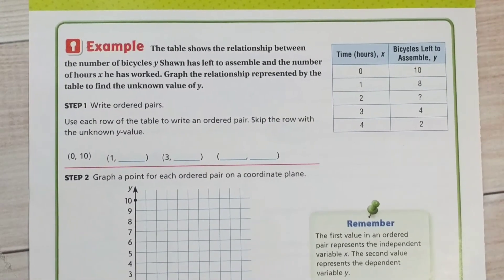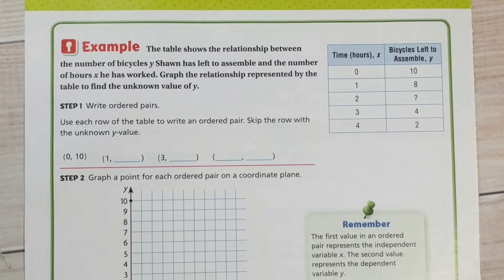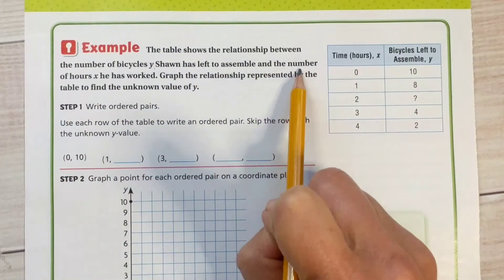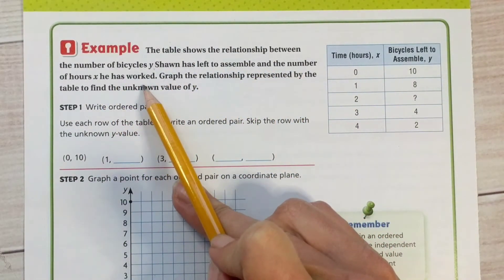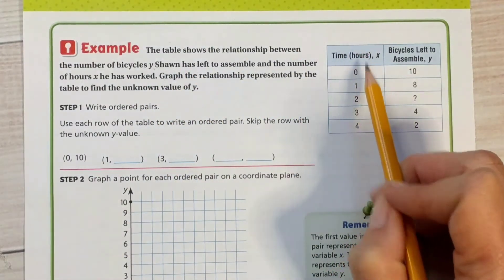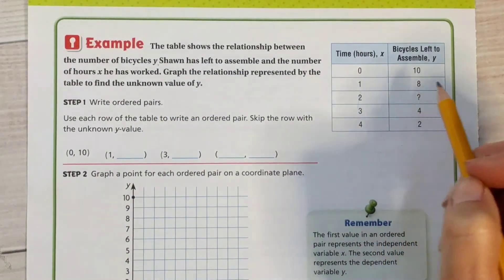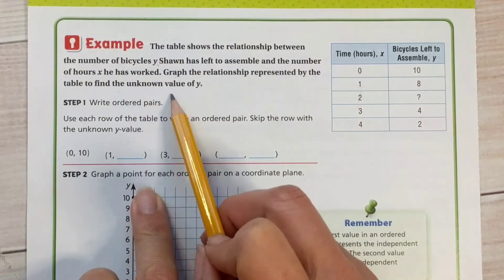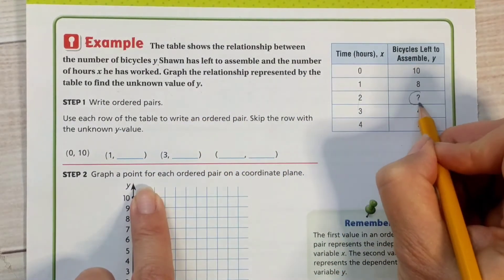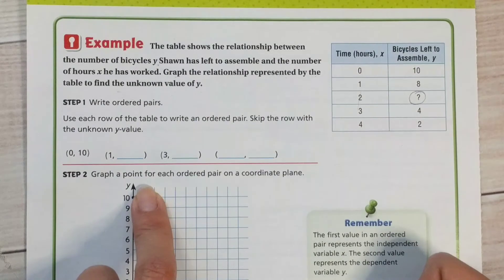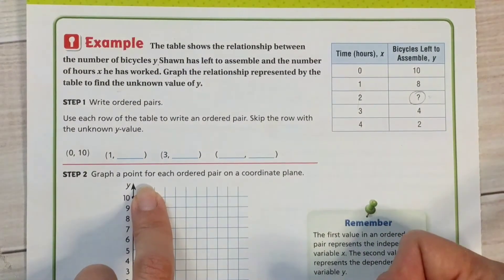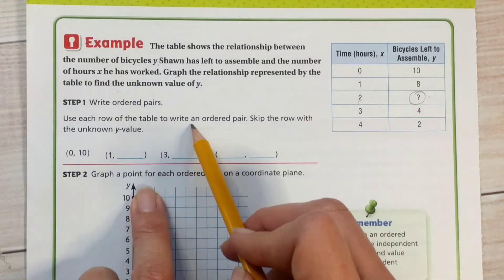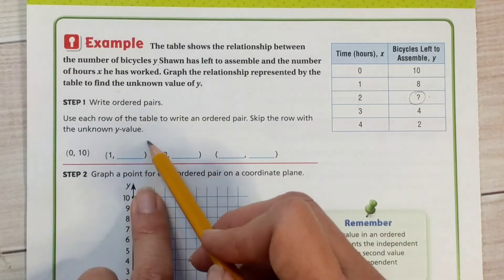Here we have, the table shows the relationship between the number of bicycles, y, so this is our dependent variable, Sean has left to assemble and the number of hours, h, he has worked. So that's our independent. This is our dependent variables in our table. Graph the relationship represented by the table to find the unknown value of y. So we have one that we don't know right here. So we're going to use a graph to determine what this value is. So we're going to write our ordered pairs. Use each row of the table to write an ordered pair. Skip the row with the unknown y value.